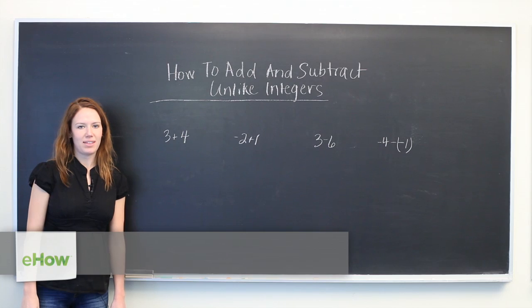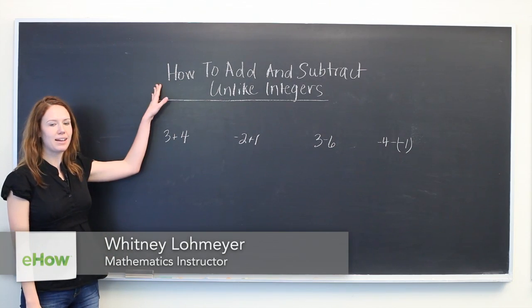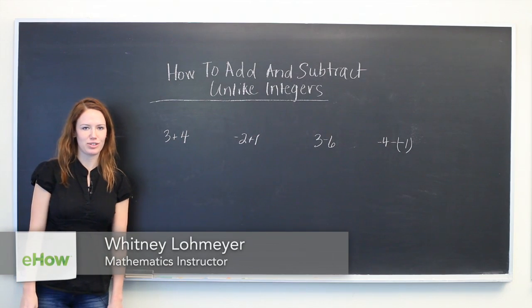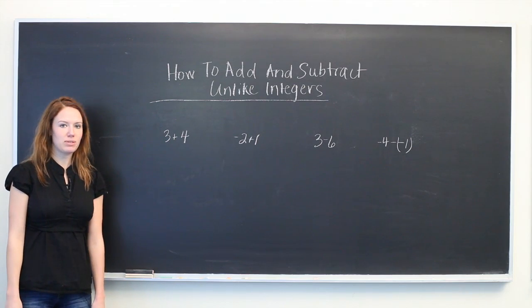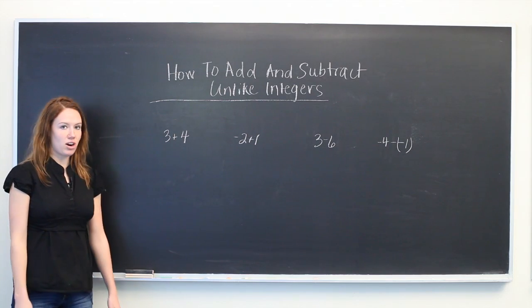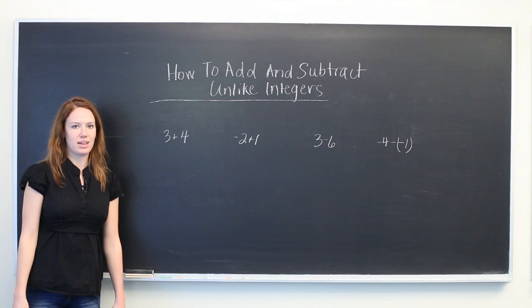Hello, my name is Whitney, and this video explains how to add and subtract unlike integers. An unlike integer is just a set of two numbers that are integers but don't have the same value.